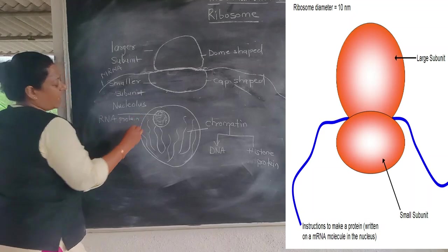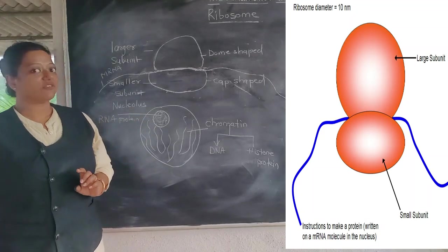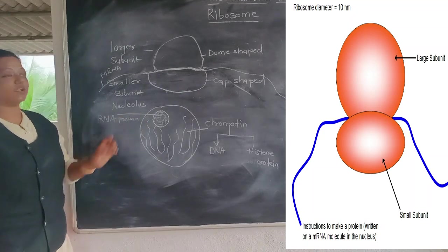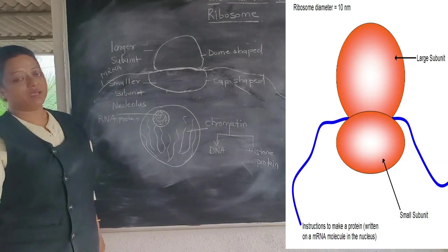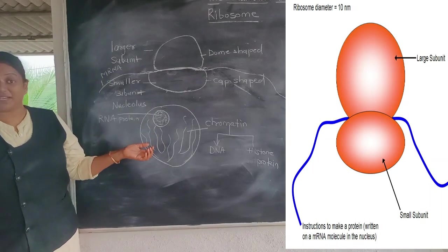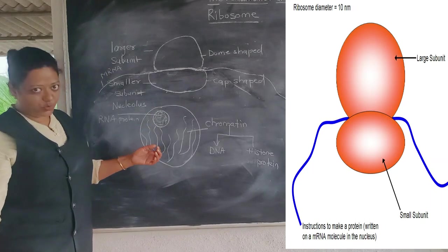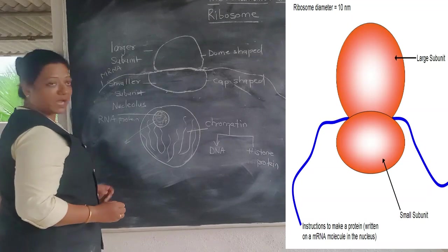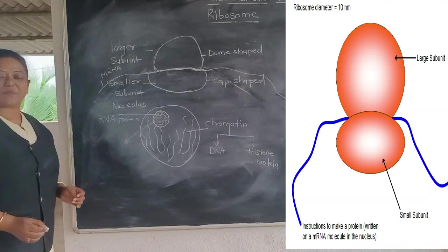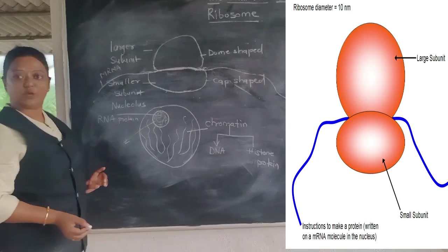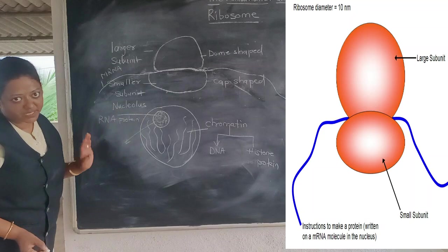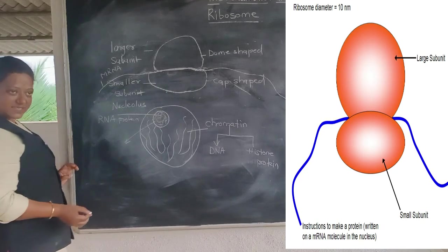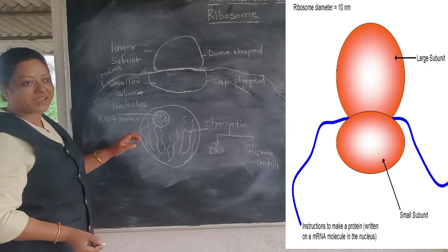The function of the nucleolus is to make ribosomes, so it is called the factory of the ribosome. However, this is not completely true. The nucleolus actually prepares the raw material for ribosome assembly — it synthesizes the larger subunit and the smaller subunit separately, not the complete ribosome directly.